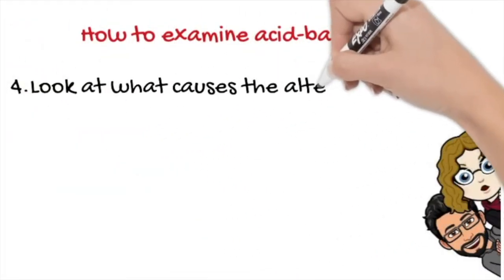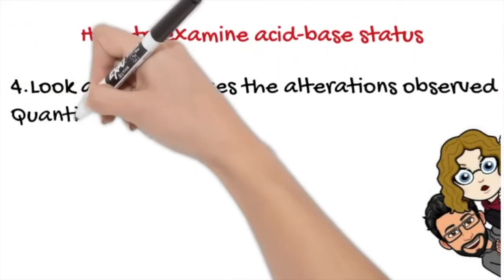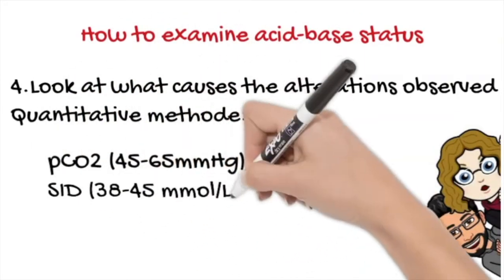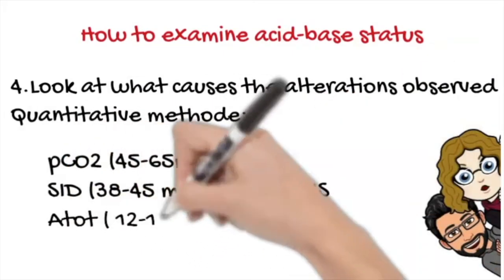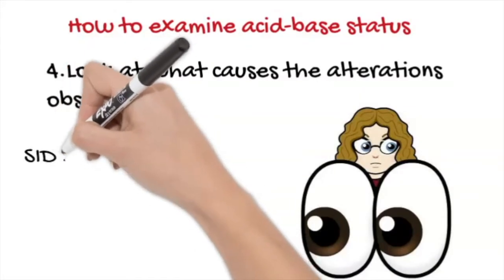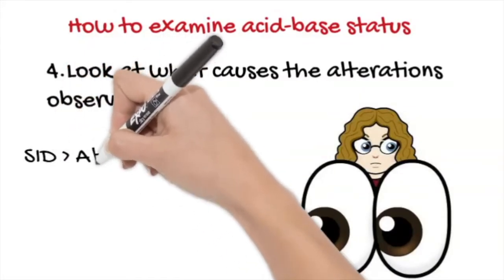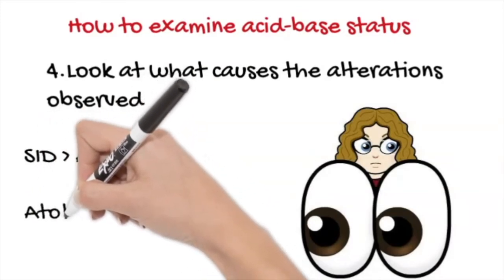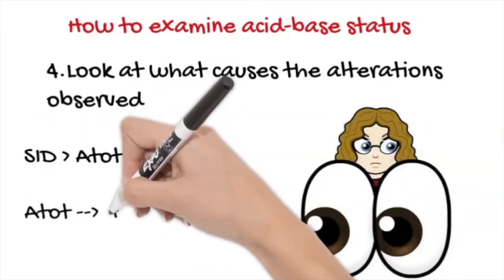The fourth step corresponds to checking and calculating the effect of electrolytes on the pH. As Valentina explained in the previous video, in the quantitative method we have three independent variables. One of them, pCO2, it was checked in the second step, but it is necessary to assess the other variables. The strong ion difference or SID which corresponds to the ion effect on pH and A-tot that corresponds to the influence that proteins have also on pH.